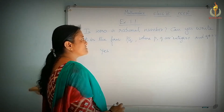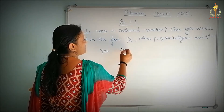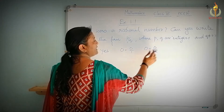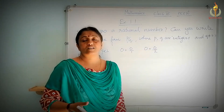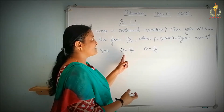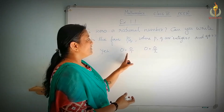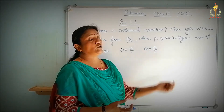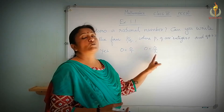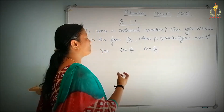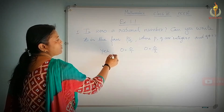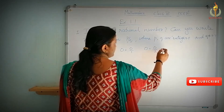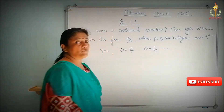Why is it yes? Because 0 can be written as 0 by 1, 0 can be written as 0 by 2, with any denominators — 0 can be written with any denominator. So where P and Q are integers, obviously P and Q are integers and Q is not equal to 0. Definitely 0 is a rational number because it can be written in the form 0 by 1, 0 by 2, 0 by 3, and it goes on. So this is your answer for the first question.